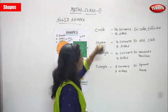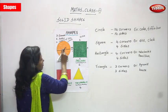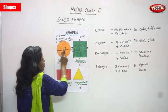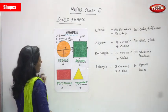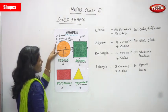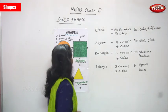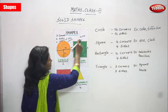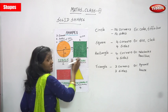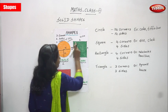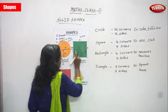To recap: circle has no corners and no sides because it's a curved shape. We draw a center point called O, then a diameter, and half the diameter is the radius. Square has four corners and four sides, and all four sides are equal.